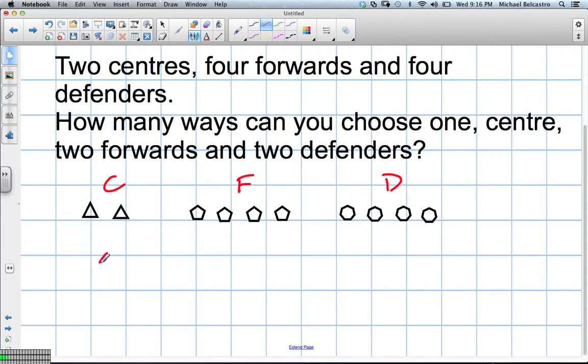We only need one center. We only need two forwards. I'm not so good at drawing things. And I'm going to make those circles. We only need two defenders. Because we know there's no order to this, these are going to be combination type questions.